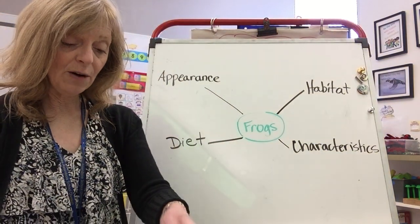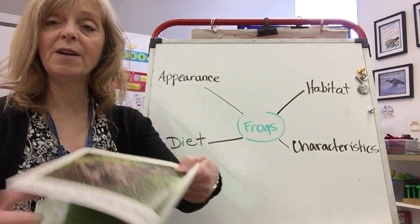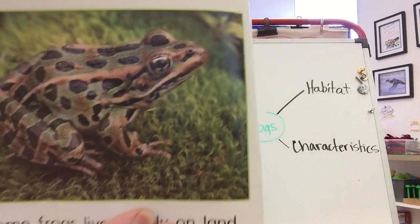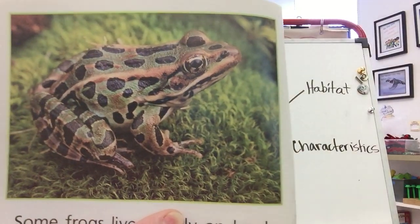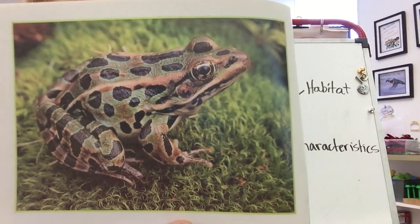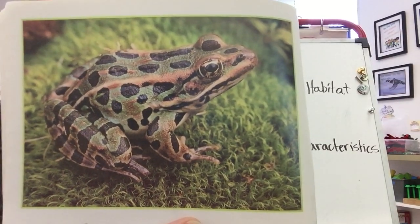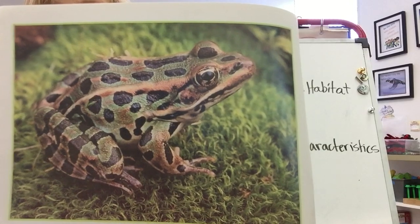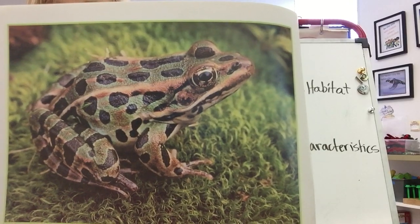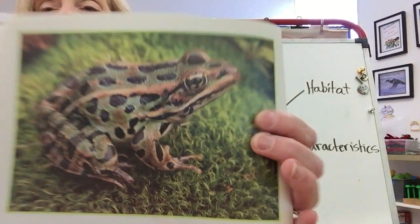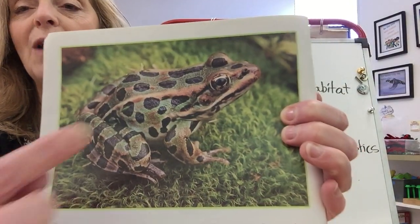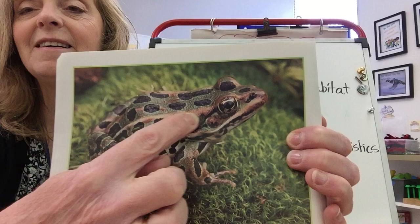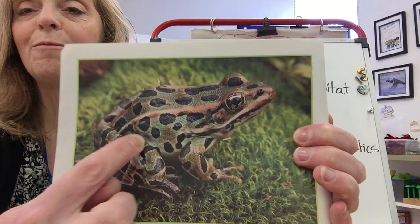You might also have seen one of these guys in Manitoba. This is called a leopard frog. They are much more green and they're spotted like a leopard. They still have brown on them — do you see this line of brown?